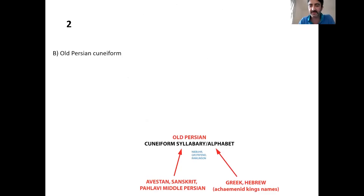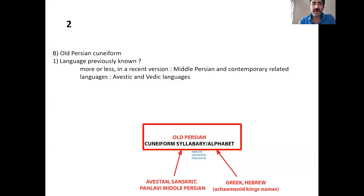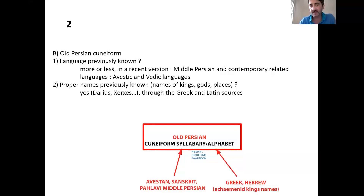So in this case, was the language previously known? Yes, more or less, in a recent version — Middle Persian — and through related languages like Avestic and Vedic. Were proper names previously known? Yes — the names of Darius, Xerxes, and so on, through Greek and Latin sources. Were there bilingual texts? Actually, there were bilingual texts through the trilingual Achaemenid inscriptions, but at that time they could not read the other languages yet. So for Grotefend, there were no bilingual texts at that time.